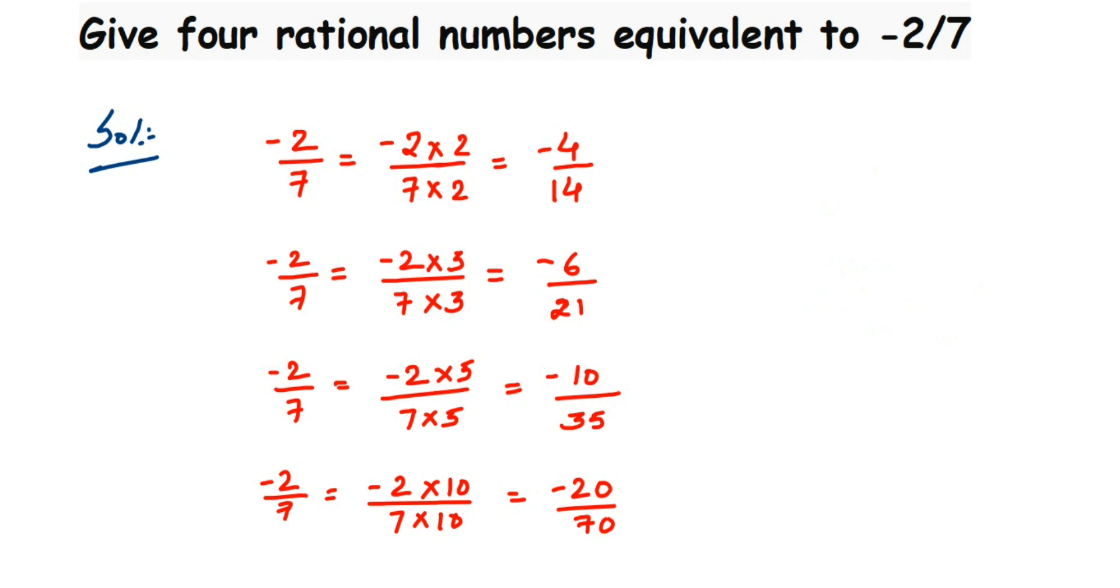So here these are the four rational numbers equivalent to minus 2 by 7. Your answer may be different than my answer. It depends upon with which number you are multiplying. So there are like infinitely many rational numbers. It depends upon the number you are multiplying. I hope this is clear.